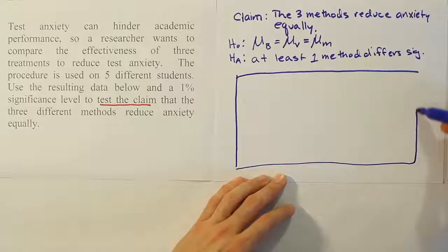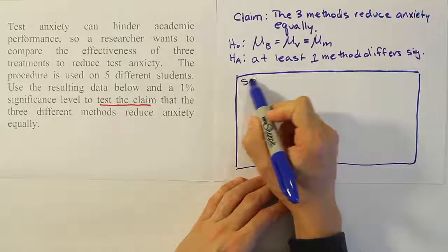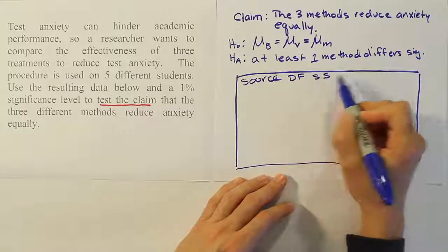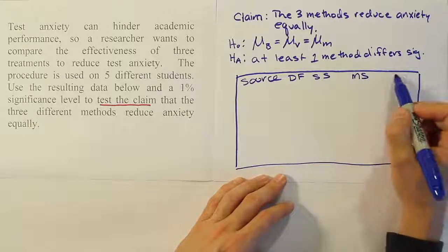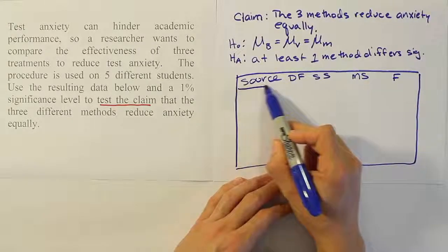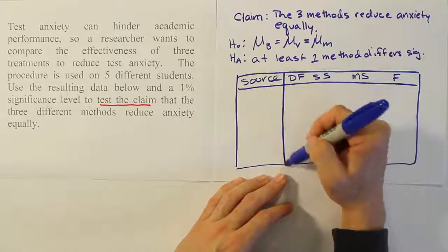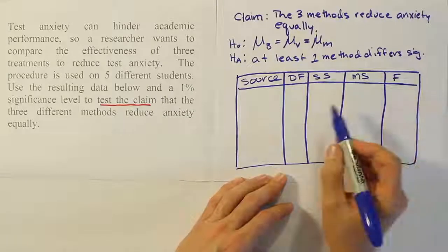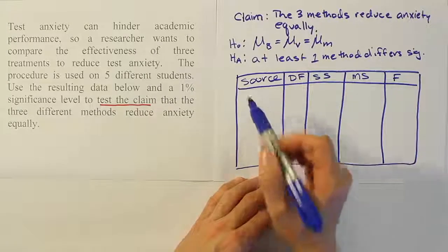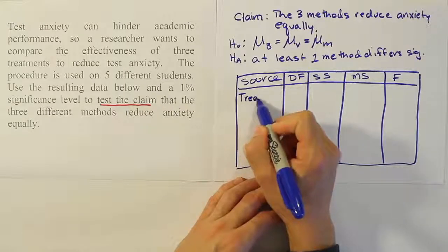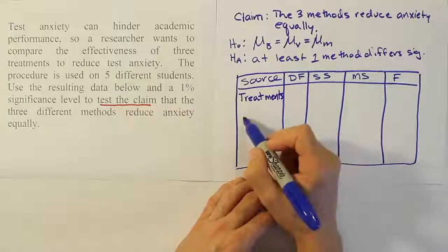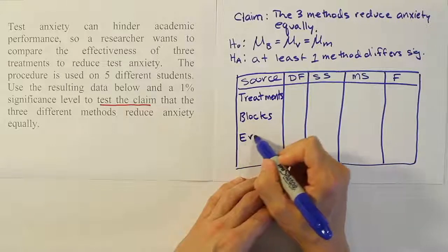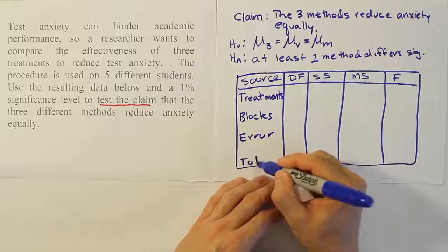Remember, the ANOVA table has a certain structure. It has a source of variation column, a degrees of freedom column, a sum of squares column, a mean square column, and finally an F statistic column. For source, we write that there's a treatment effect, then a source of variation due to blocks, then random error, and finally a total row at the bottom.